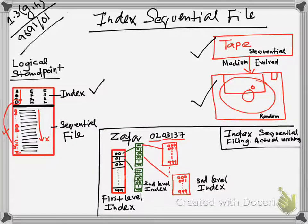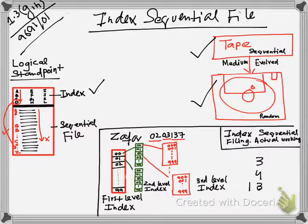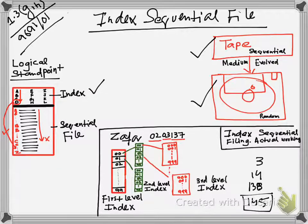Now let's say you want to reach account number 0203137. You would read the first level index three times: 00, 01, 02. From 02 you go to its second level index and read it four times to reach 03. From 03 you go to its third level index and read it 138 times to reach 137. So together that is 3 + 4 + 138 = 145 searches to reach this particular record.